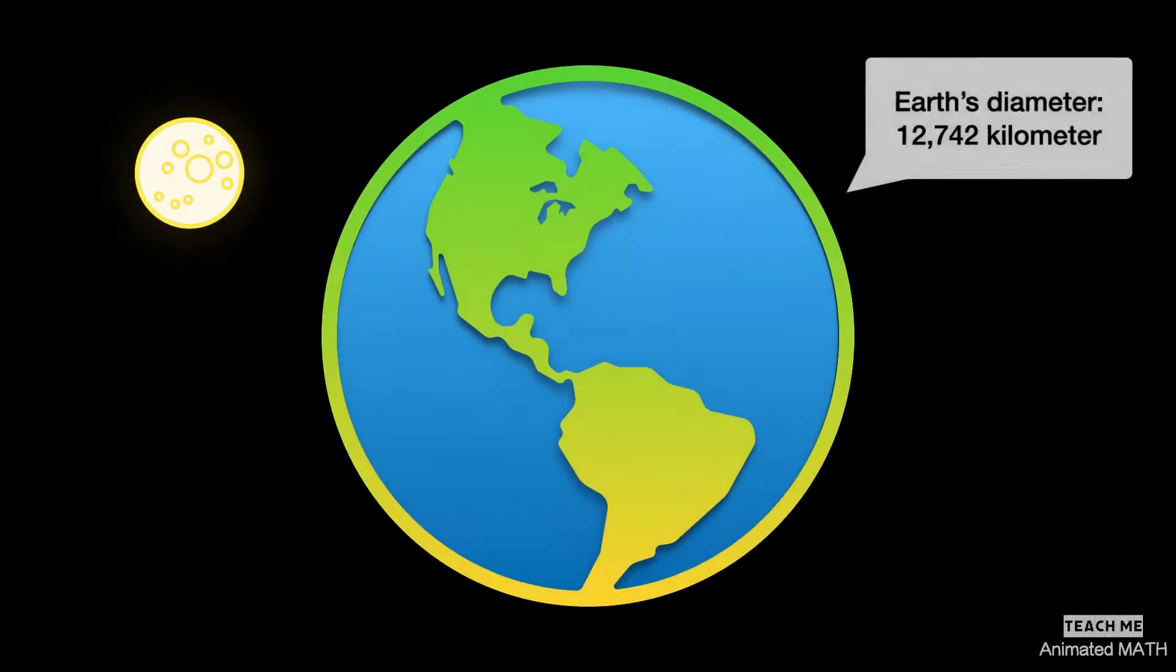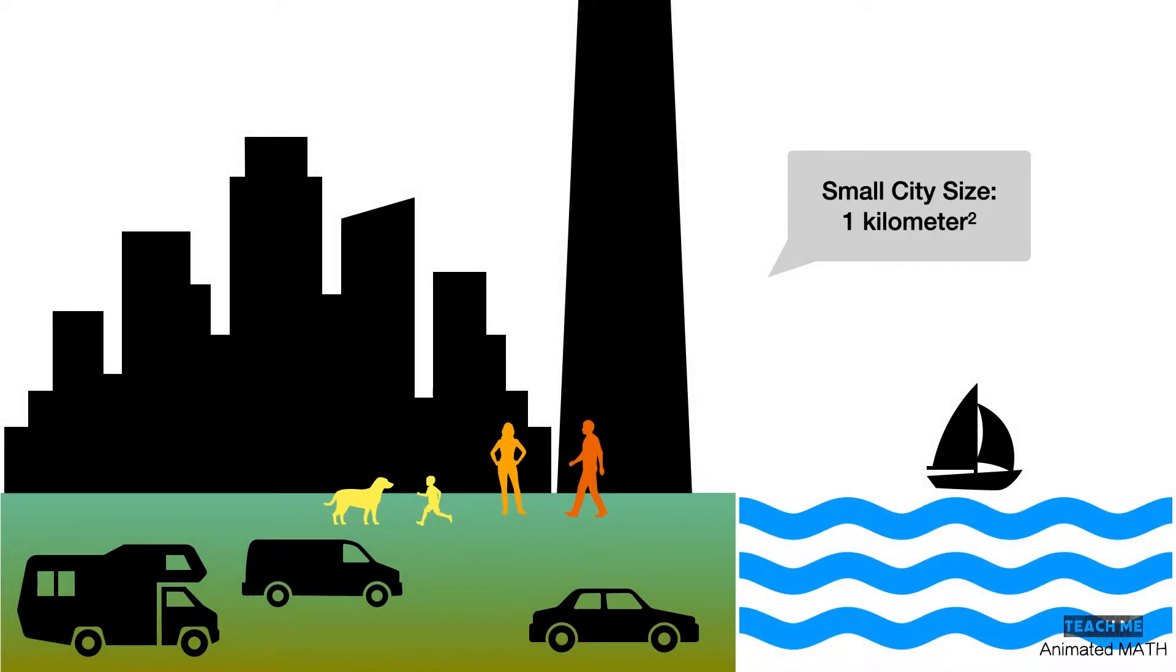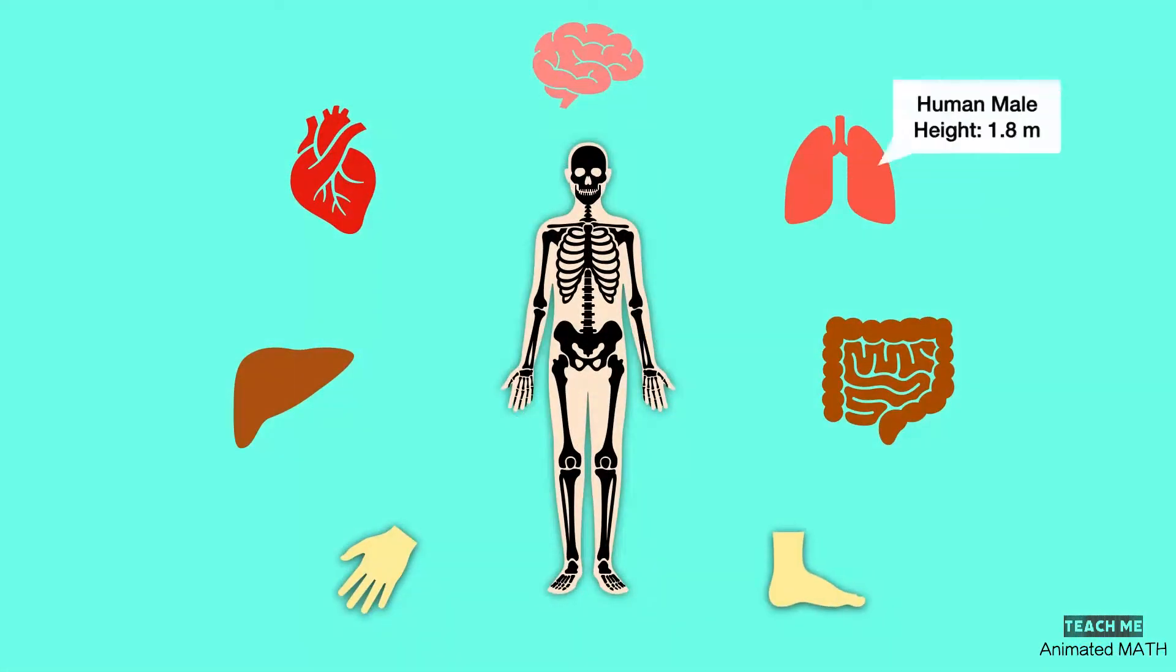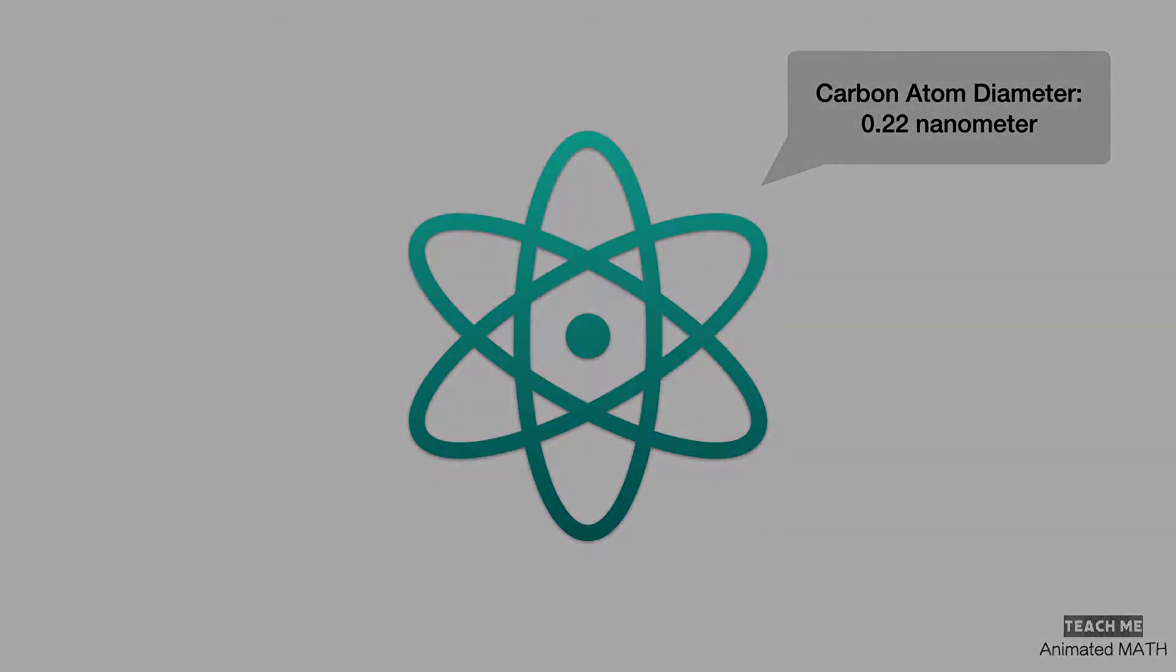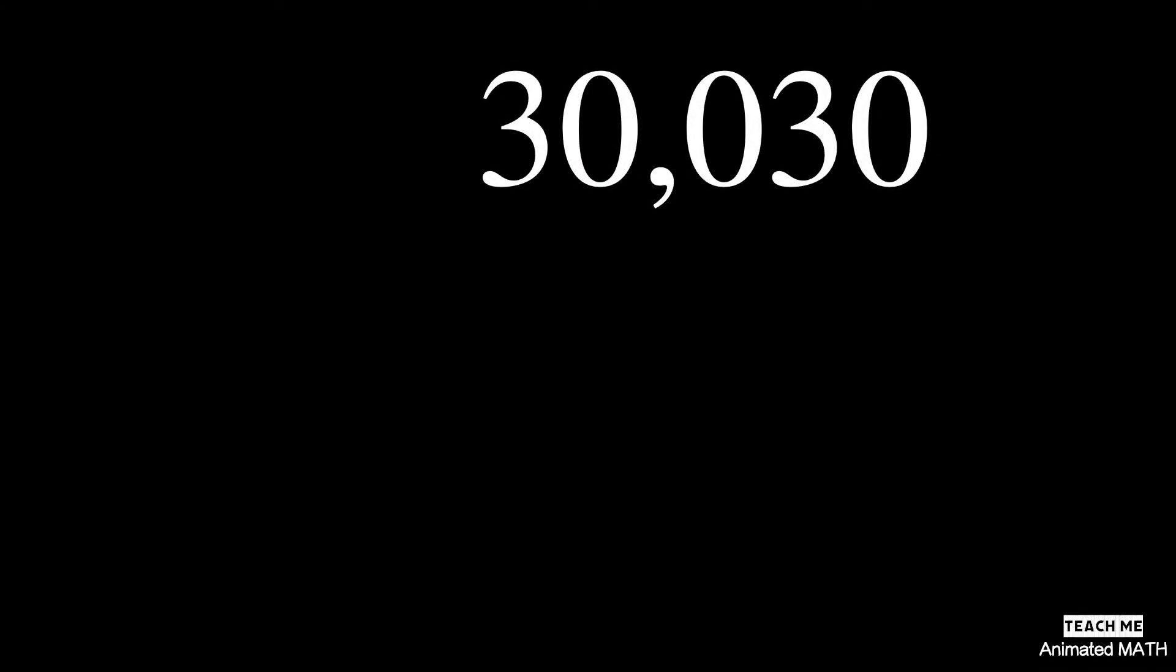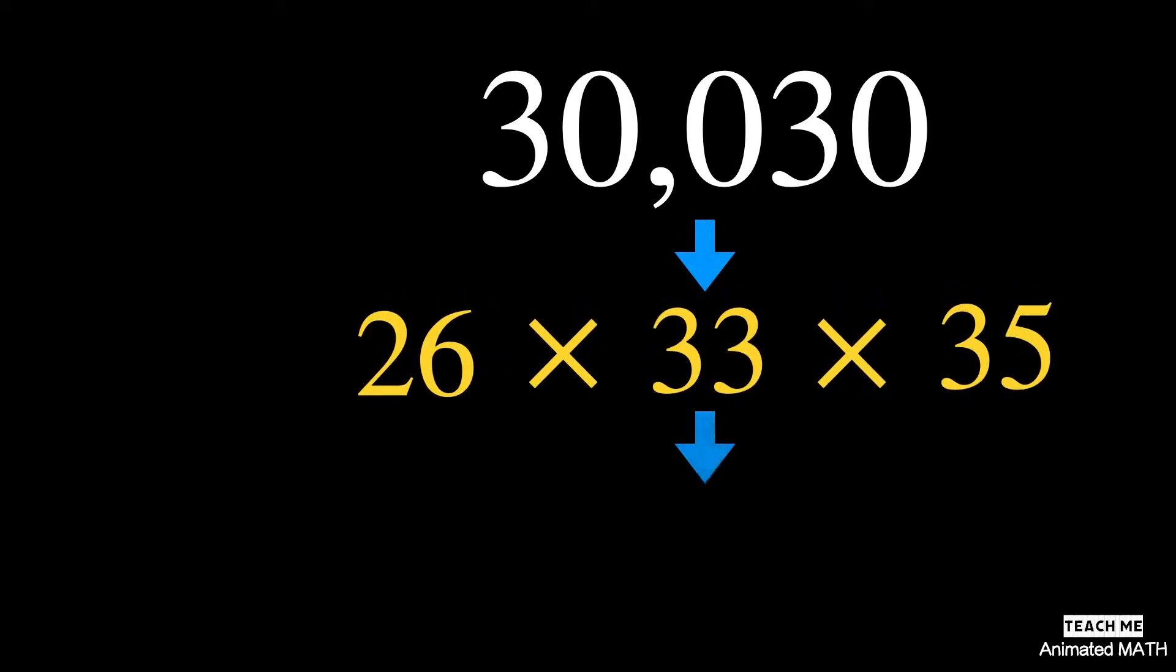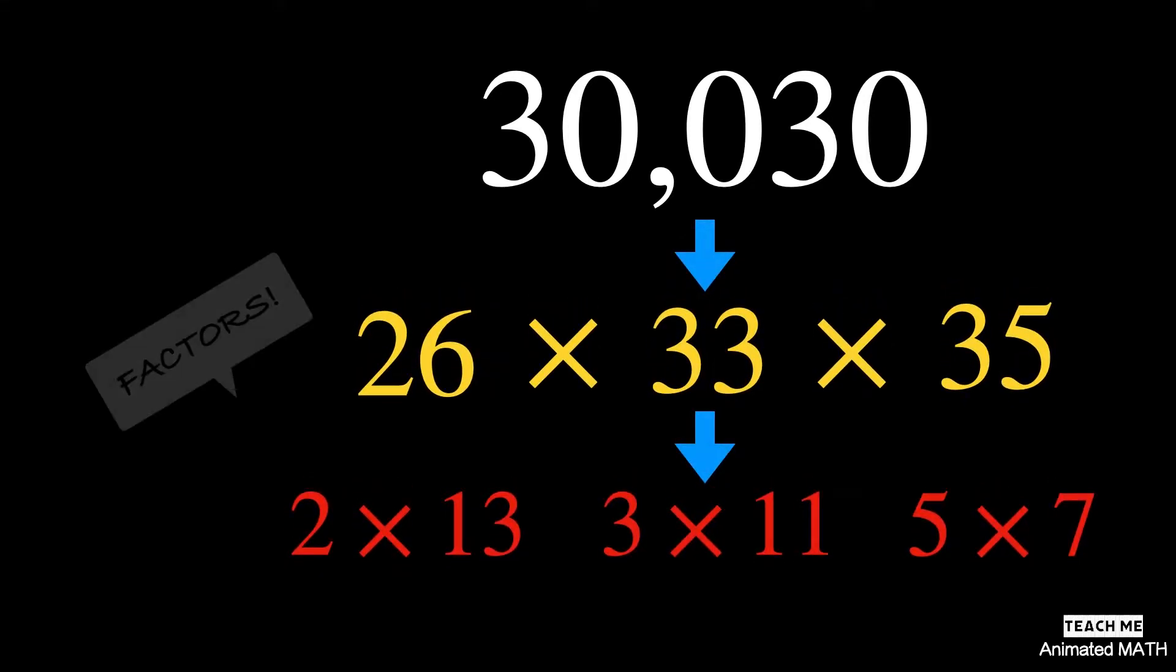Everything in this world is made up of something simpler or smaller than it is. And the world of mathematics is no exception to this rule. Which is why big numbers are made from smaller numbers that we call factors.